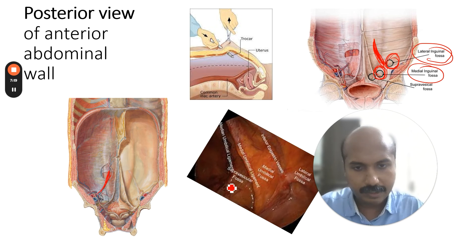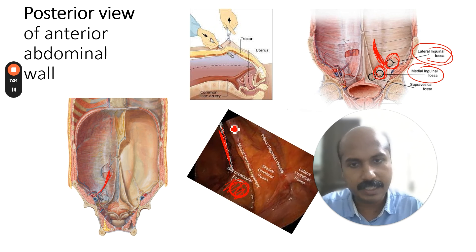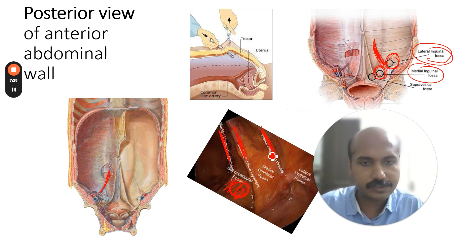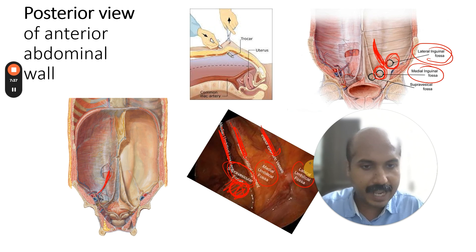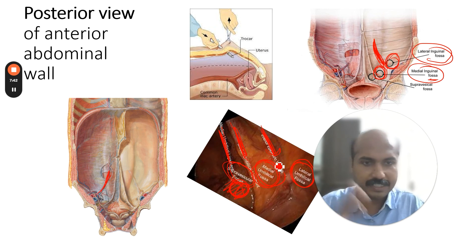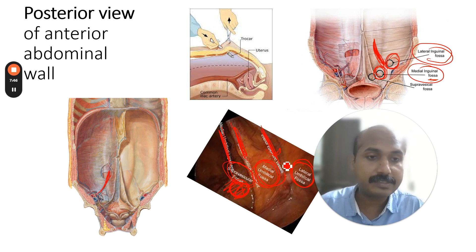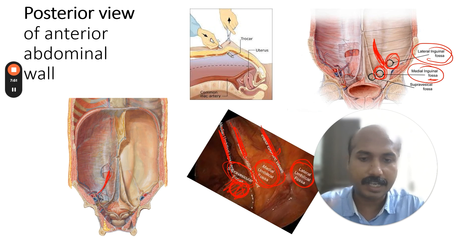In a laparoscopic view, you can see the bladder, the median umbilical ligament, the medial umbilical ligament, and the inferior epigastric vessels forming the lateral umbilical fold. The supravesicle fossa and the medial and lateral inguinal fossae are visible flanking both sides of the inferior epigastric vessels. All this anatomy is important from a laparoscopic and surgical anatomy perspective.